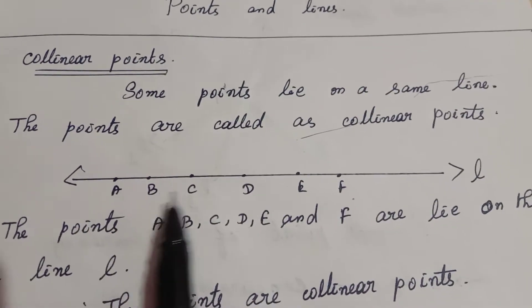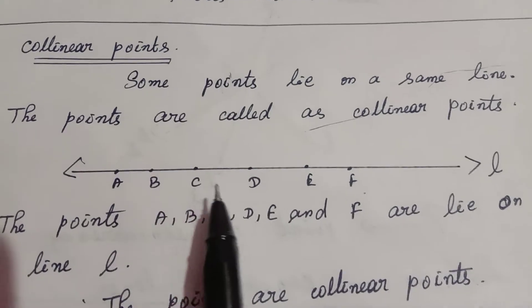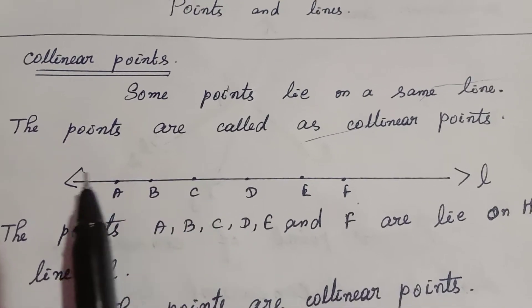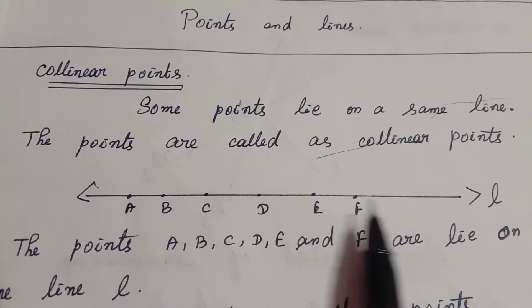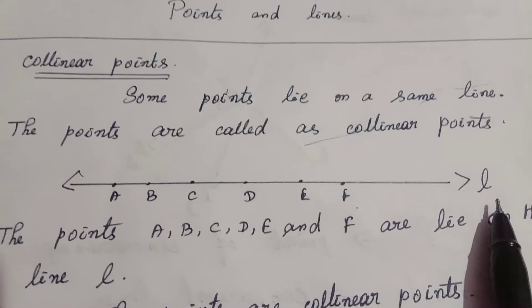Here there are many points: A, B, C, D, E, and F. These points lie on the same line L.